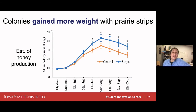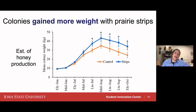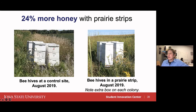Each data point represents an average across six or seven locations, and the error bars are the standard error of the mean. The asterisk represents a statistical difference using an LS means test at p = 0.05. Over the course of three years, we get more honey when we keep bees at a farm with a prairie strip than without. In August 2019, the last year of the study, colonies at control sites each had three supers while those at prairie strip sites had four — visually showing the increased productivity when these prairie strips are in the landscape.